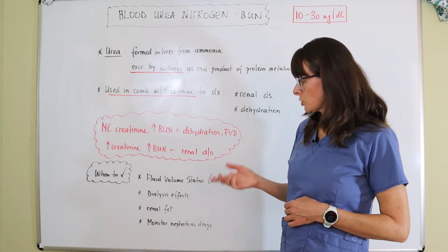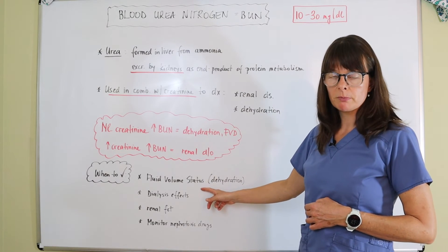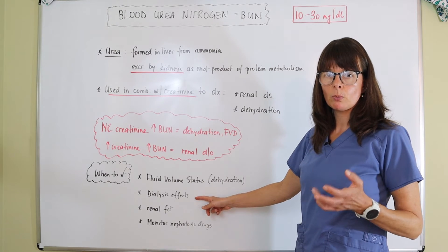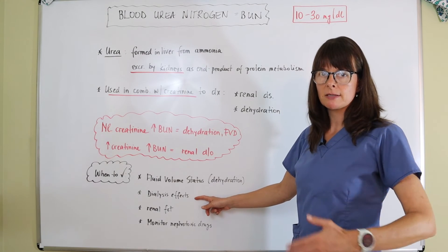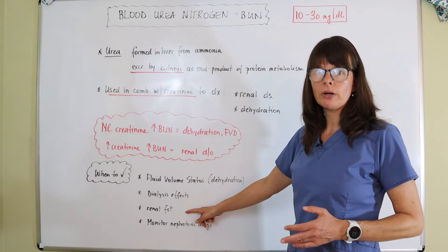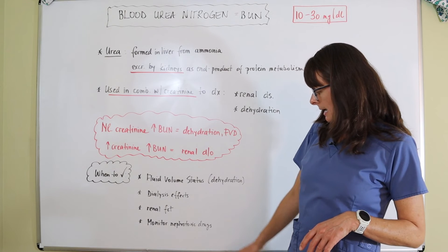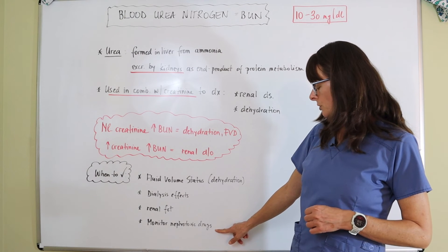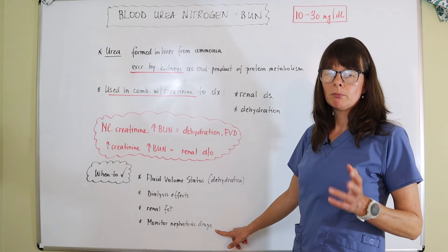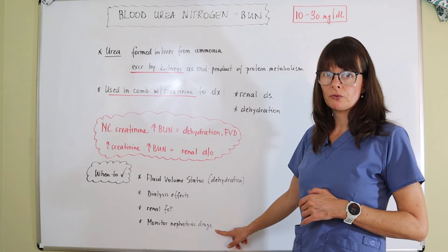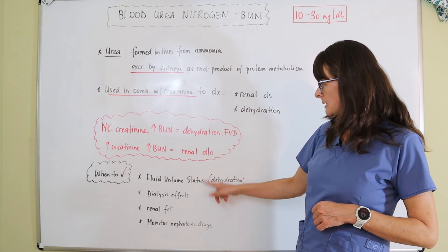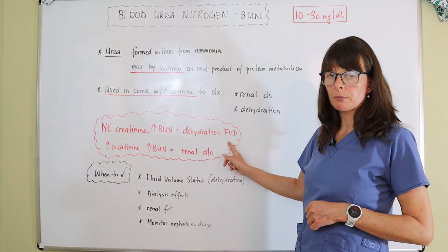BUN is usually checked when we want to know about the patient's fluid volume status — are they dehydrated? It's also used to assess the effects of dialysis, since patients on dialysis typically have fluid volume excess. We also want to evaluate renal function for any kind of renal disorder, from acute to chronic, and to monitor nephrotoxic drugs and the effects they might be having on the kidney. We check BUN before and during the administration of these medications. Please also check out the other videos covering fluid volume deficit and fluid volume excess.